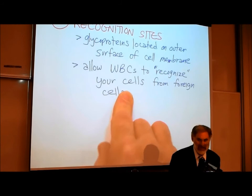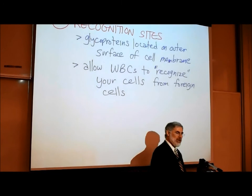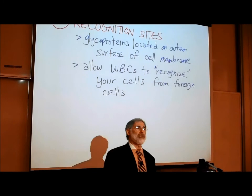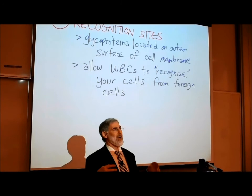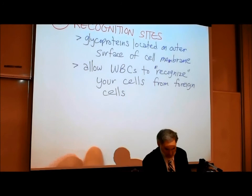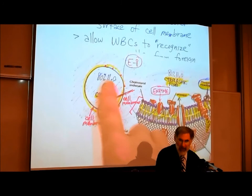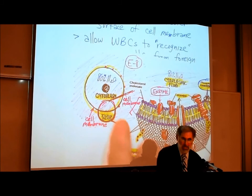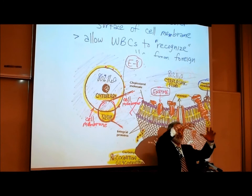They allow your white blood cells to recognize your cells from foreign cells. When a bacteria enters your body, how do your white blood cells know to destroy the bacterial cell? They must recognize that a bacterial cell is not one of your own cells. There are glycoprotein recognition sites located on the outer surface of every cell in your body.